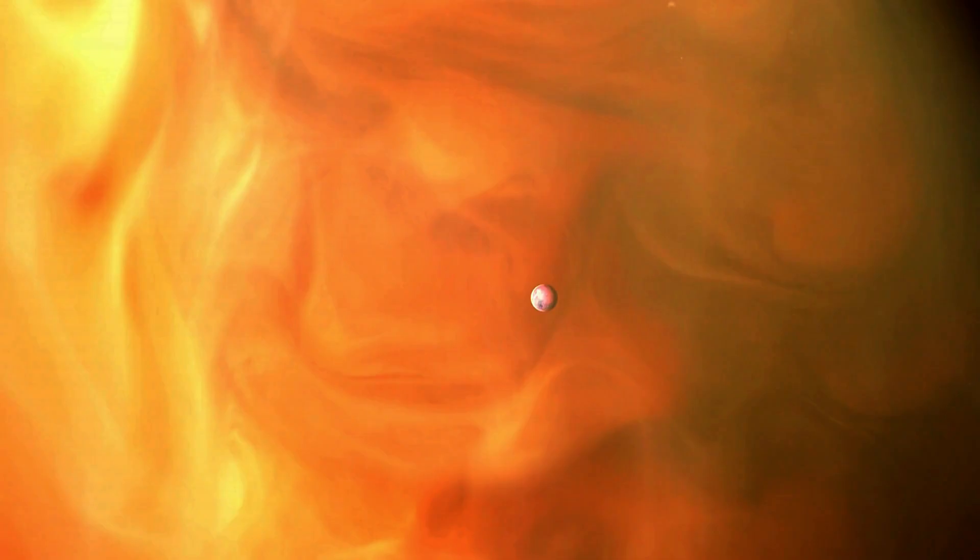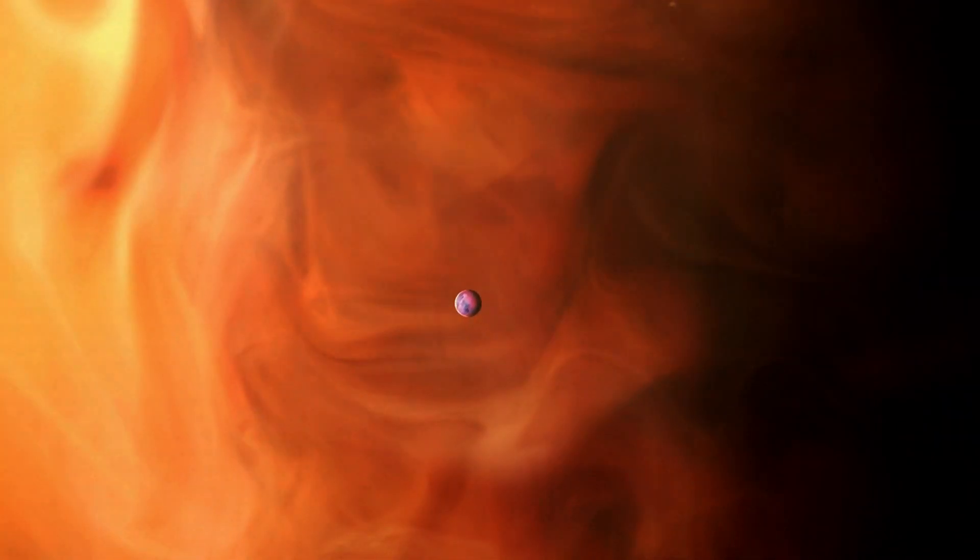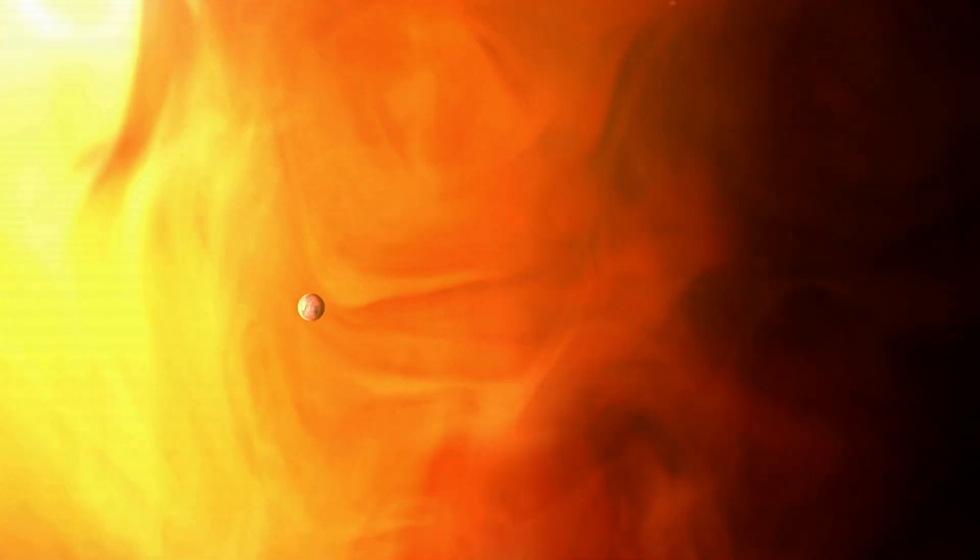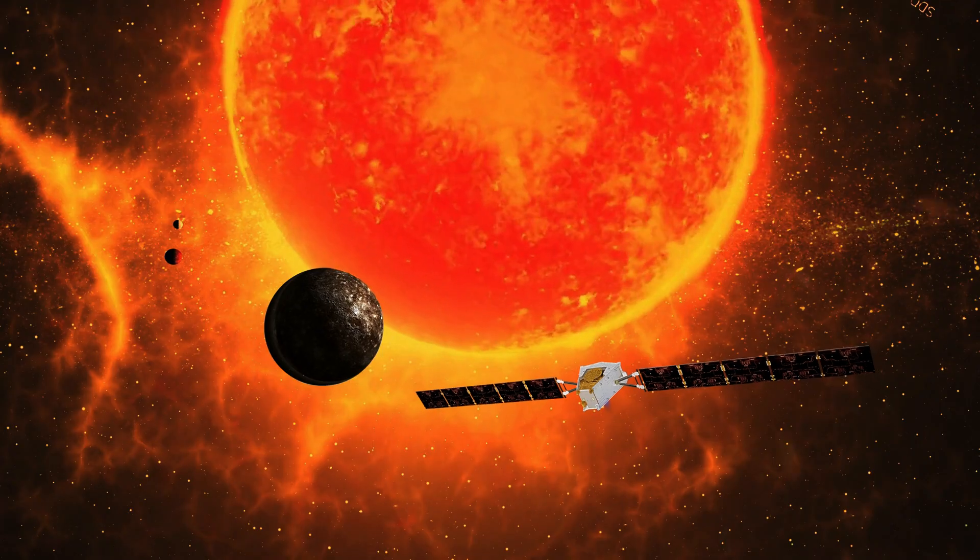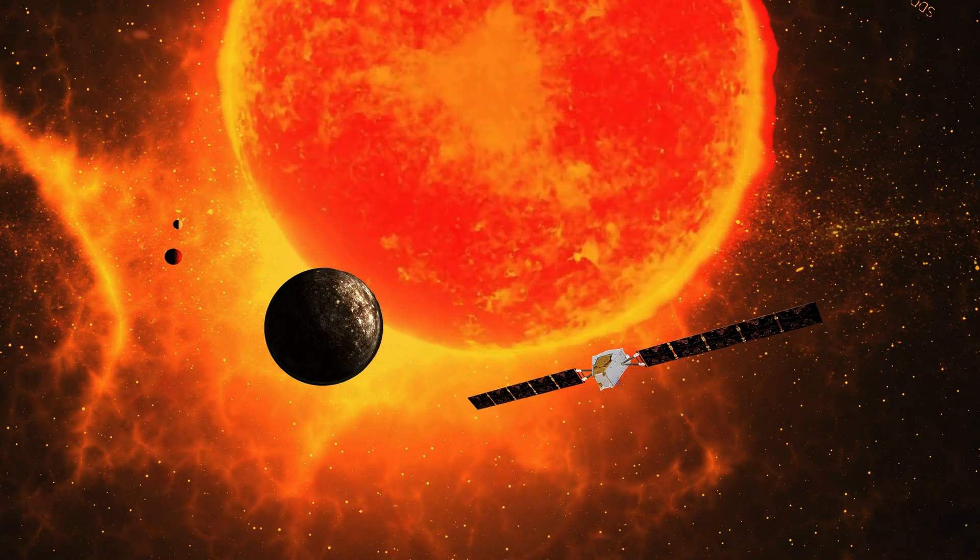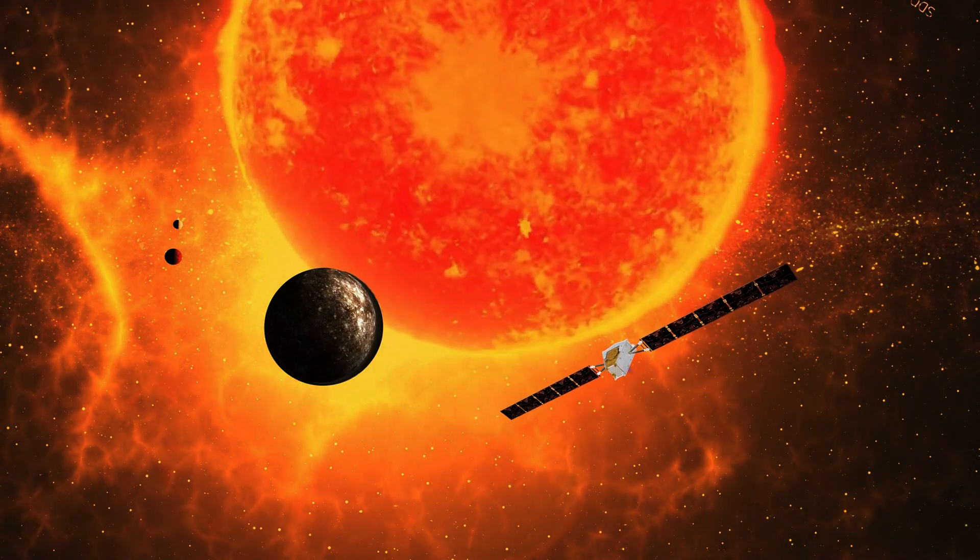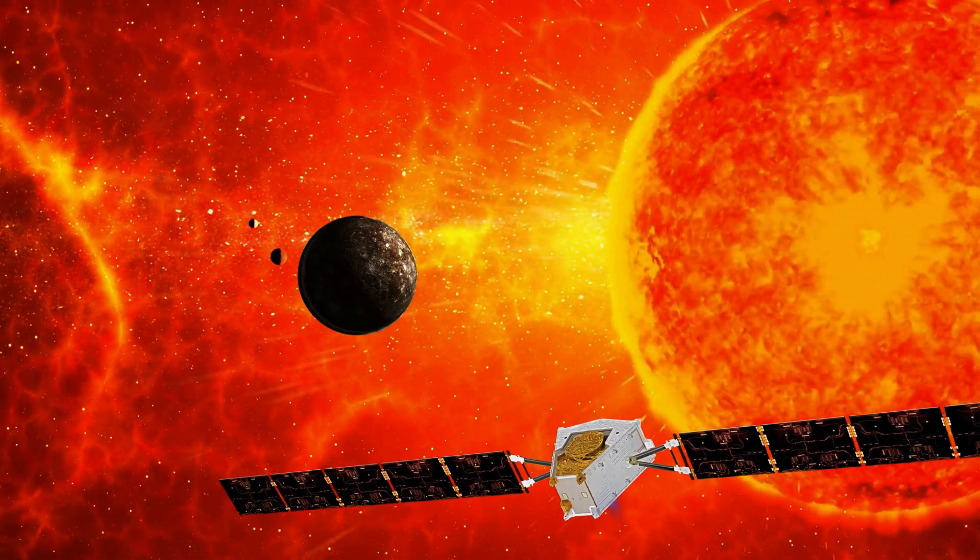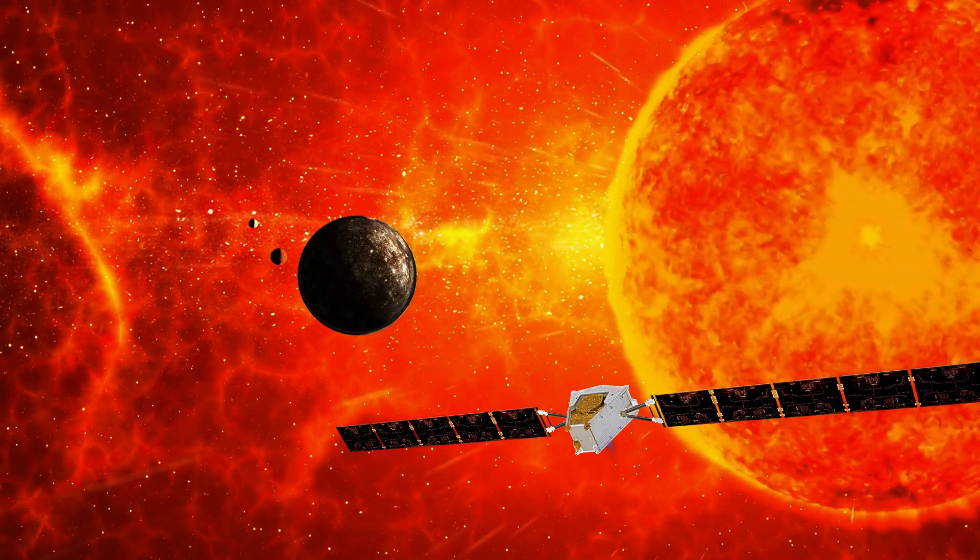The sun doesn't just burn Mercury, it whips it. Magnetic tornadoes, born from solar winds tangling with Mercury's field, rage across its surface. These storms can swallow Earth whole, yet BepiColombo flies straight into the chaos. Because hidden here is the key to stellar survival.